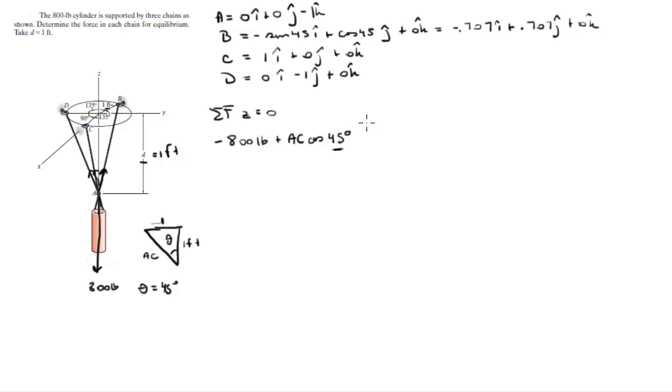You got AC cosine of 45 plus AB cosine of 45 plus AD cosine of 45 is equal to 0. In conclusion, 0.707 AC plus 0.707 AB plus 0.707 AD is equal to 800.